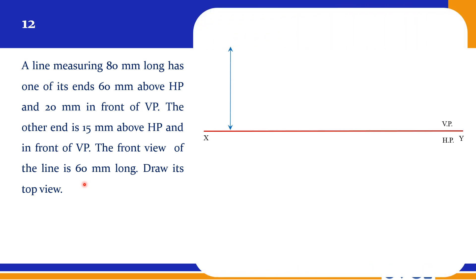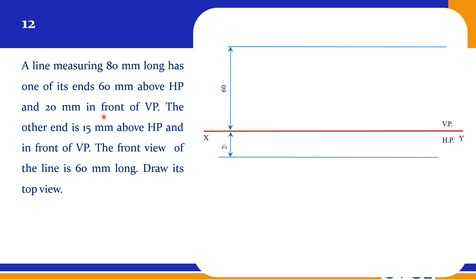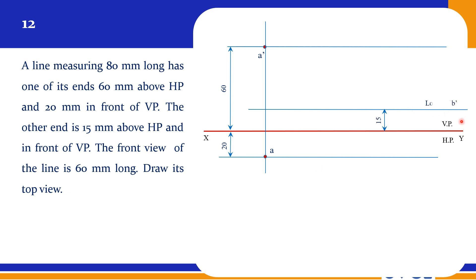So we will solve this. One end is 60mm above HP — so that is A dash — and 20mm in front of VP. We will consider this as A dash, and this will become our A. Now we have one end; we have to find the other end. The other end is 15mm above HP, so this will become our locus of B dash. In front of VP is not known — it is not given. Instead, we have the true length, so we can easily find out the other end.